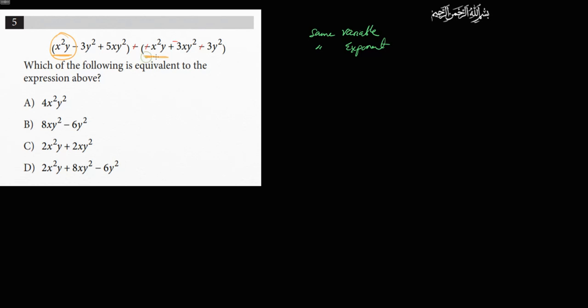And there's no other x²y, but there is one over here. So these are like terms. Well, then you can add them. So x²y, there's another x²y, that's going to be 2x²y.